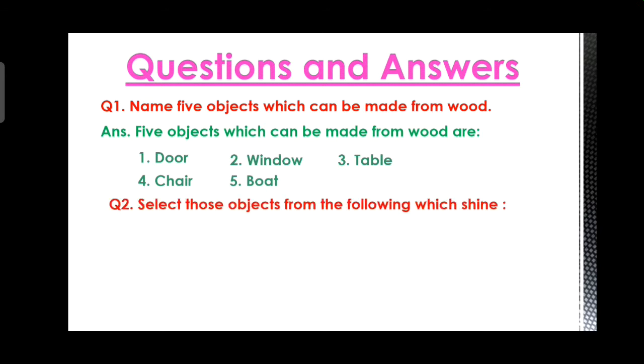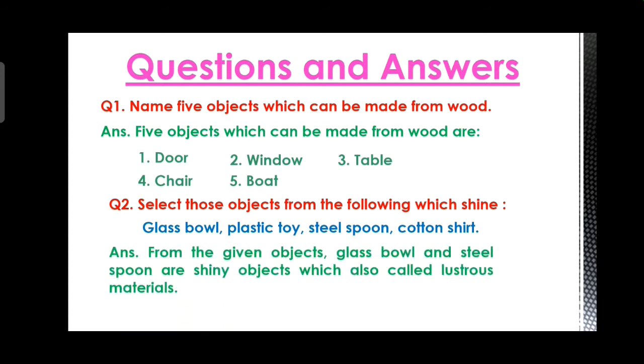Next question: select those objects from the following which shine - glass bowl, plastic toy, steel spoon, cotton shirt. Answer is, from the given objects, glass bowl and steel spoon are shiny objects, which are also called lustrous materials.